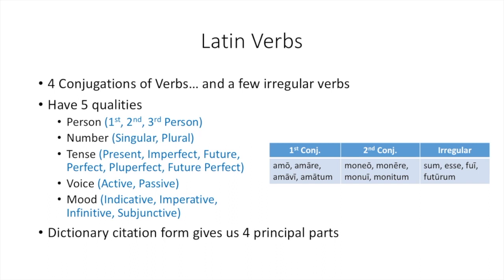All verbs have the same five qualities: the person, number, tense, voice, and mood. The first person is I or we, second person is you or y'all, third person is he, she, it, or they.